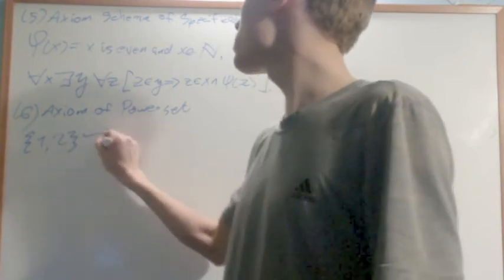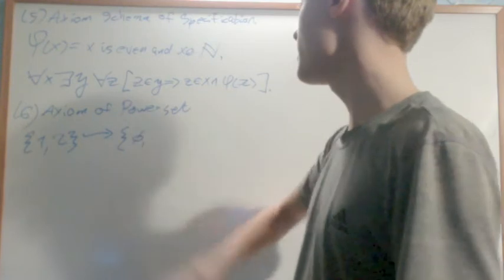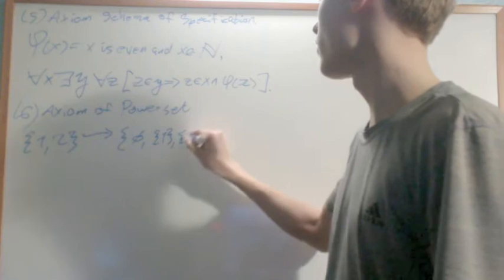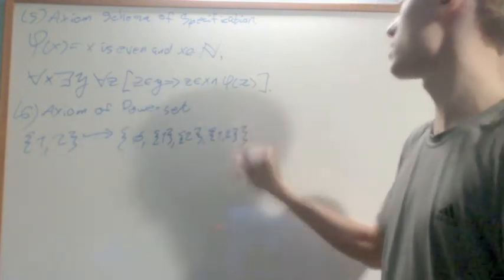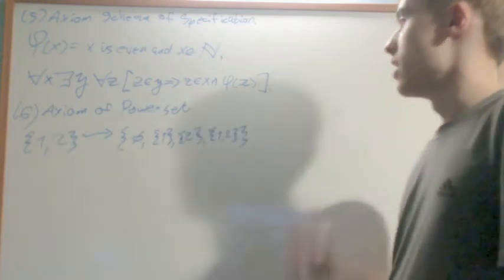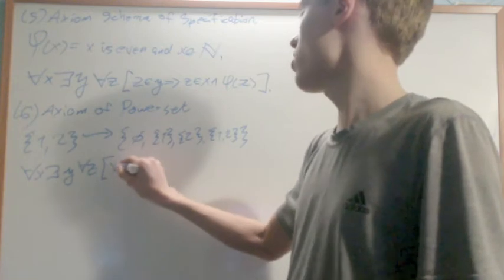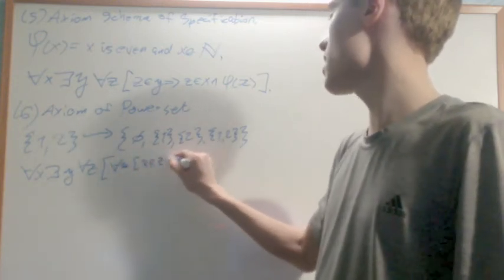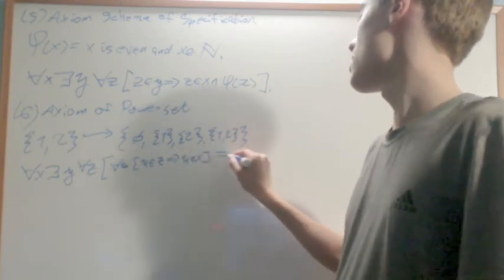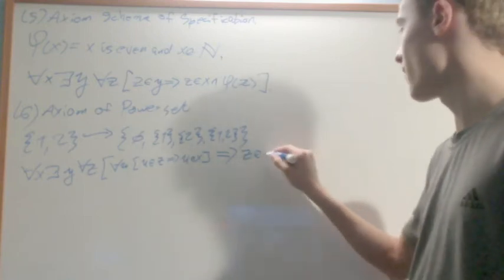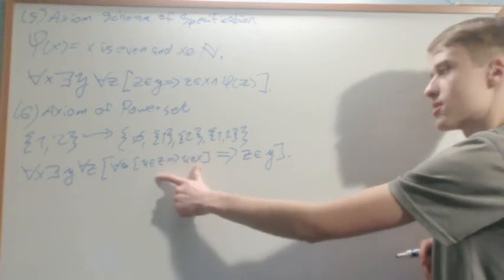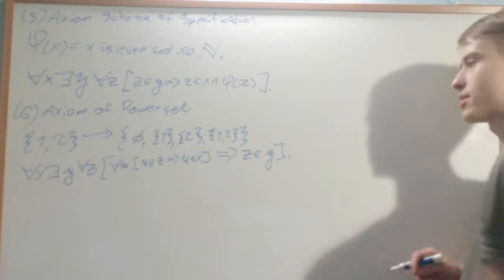Number six is the axiom of power set. If I have a set, say {1, 2}, what I can construct from that is its power set: the set of the empty set, the set of {1}, the set of {2}, and the set of {1, 2}. This is the set of all subsets. The axiom of power set says: for any x, there exists y such that for all z, if for all u, u is an element of z implies u is an element of x, then z is an element of y. This is constructing the power set — it guarantees z is a subset of x and z is an element of y, where y is the power set.